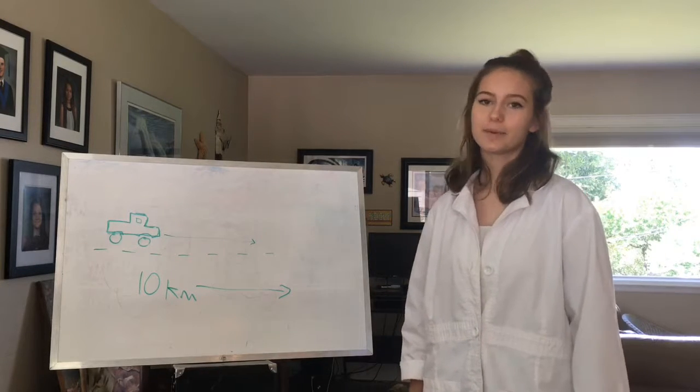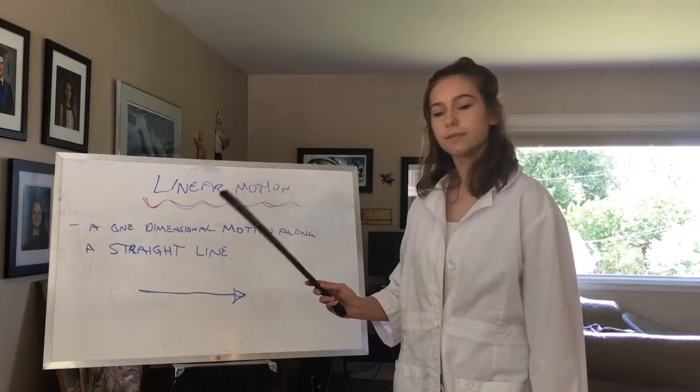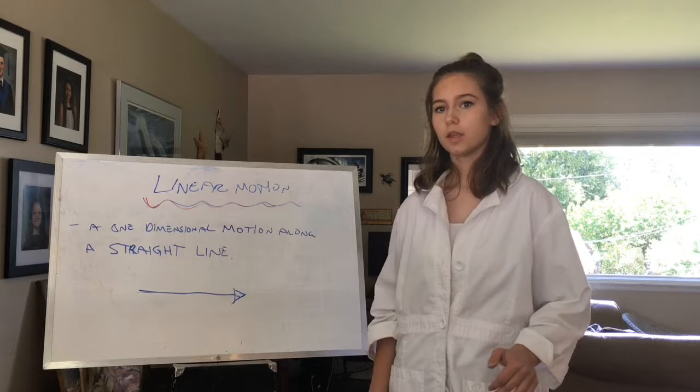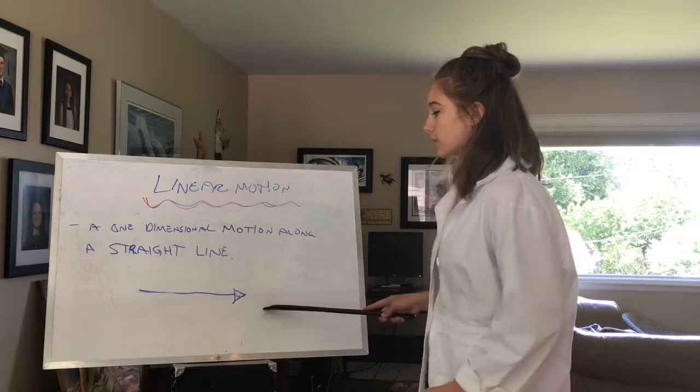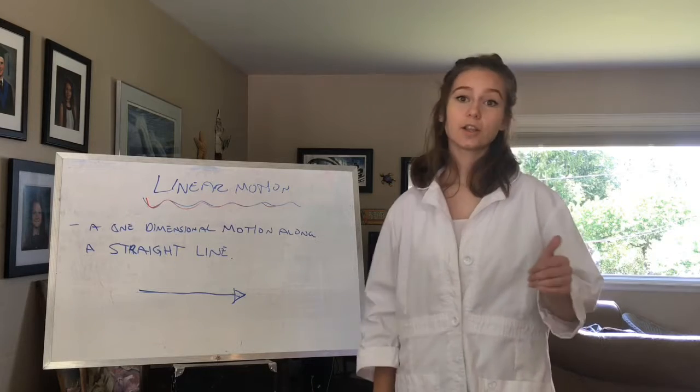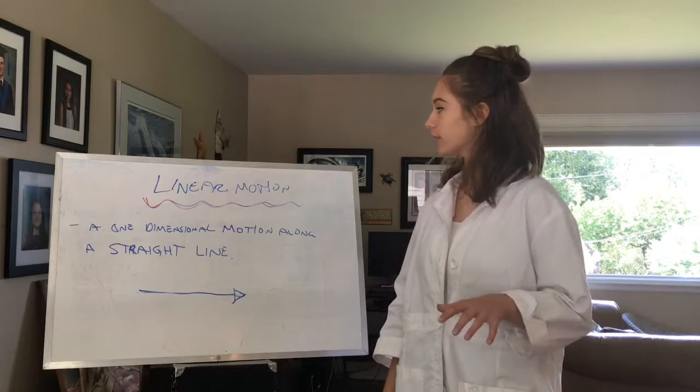Now that we've discussed uniform motion, let's take a look at linear motion, which is a little bit different. Linear motion is a one-dimensional motion along a straight line. So while we know the direction is constant, the speed can be a variable. Let's take a look at a graph that shows linear motion.